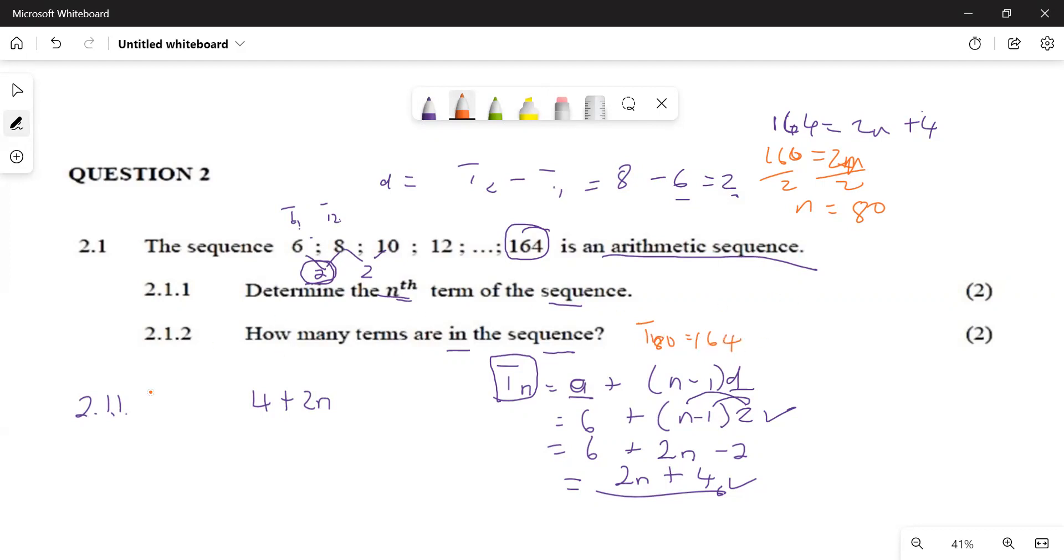Usually what they will give to learners here, let's say 2.1.3, they will say to learners determine the 24th term. You'll see 24th, if you see 3rd, 4th, something like that, it means they gave you n. Once you see an abbreviation in their own term, it means they gave us the position. If they say determine the 24th term, I mean everywhere you see n you're going to put 24.